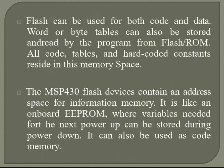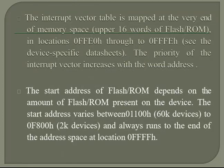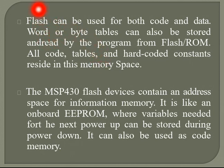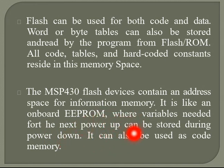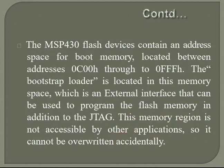All addresses and spaces are shown in the diagram. Flash memory can be used for both code and data; word or byte tables can also be stored in flash ROM, which can hold code tables or hard-coded constants residing in this memory space. MSP430 flash devices also contain an address space for information memory, which serves as on-board EEPROM where you can store variables before powering down, and can also be used for code memory.